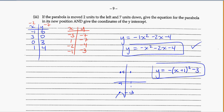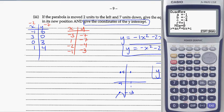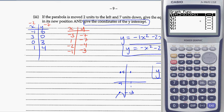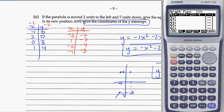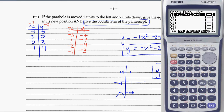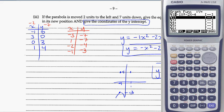They also want the position of the y-intercept. To find that, use the calculator — copy this equation into the graph function, hit execute, and it should be there. Go to menu, graph, and we see our equation. Go ahead and draw it. If it gives an error, just type it in again: negative 1, x squared, minus 2x, minus 4.